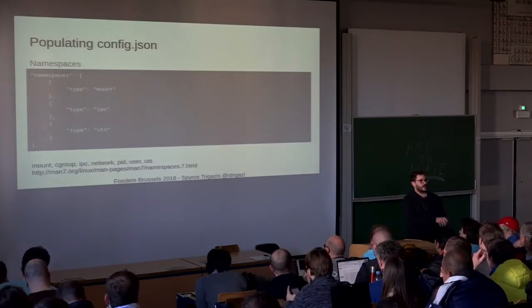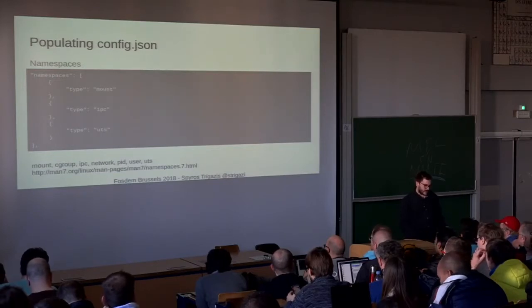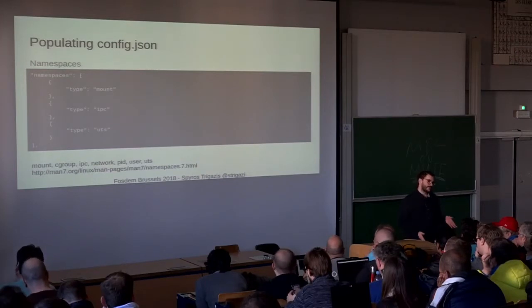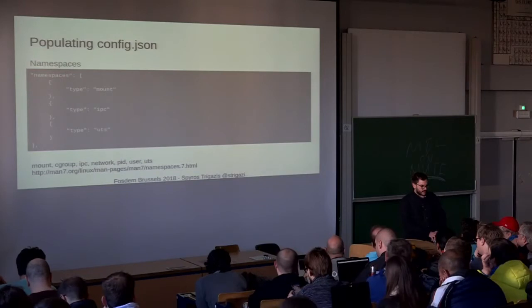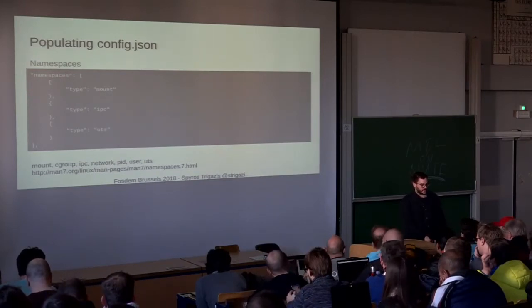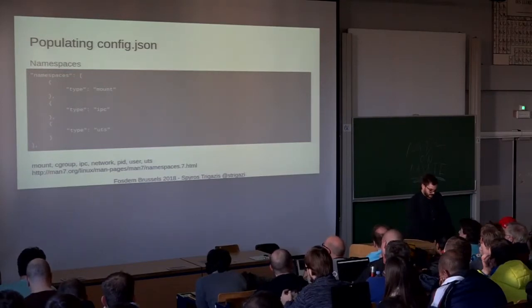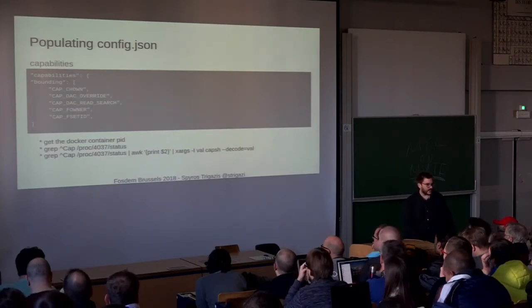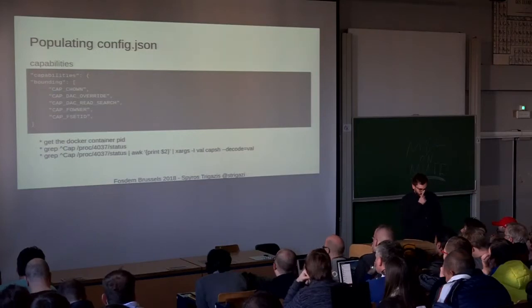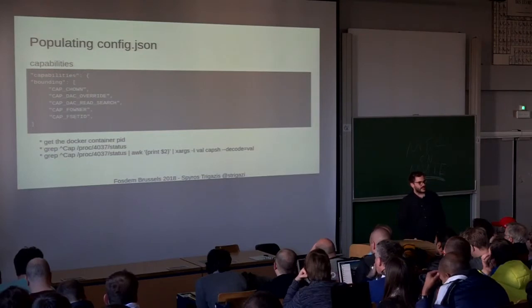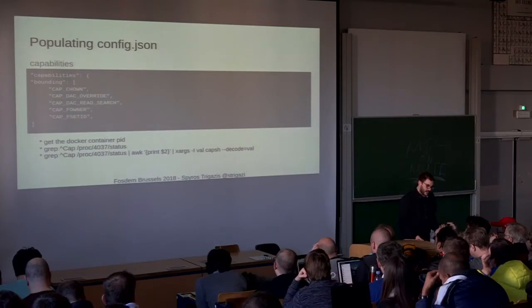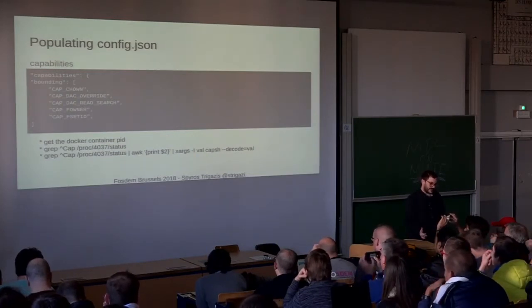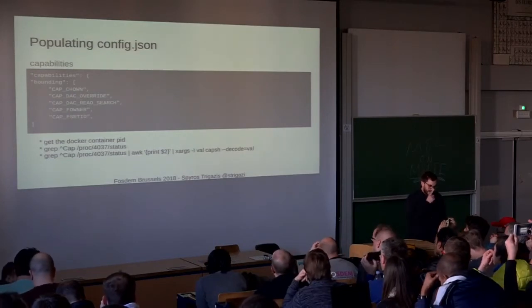You might also need the PID namespace if you have more than one process in your container. For system containers — which are very close to the host — you usually don't want to add a network namespace; it's better to share the same network namespace with the host. Then there are capabilities. The Linux kernel man pages list an endless number of capabilities. A very useful trick: if you start a container with Docker, get the PID of the Docker process, go to the proc filesystem, and with some grep you can find exactly which capabilities you need.